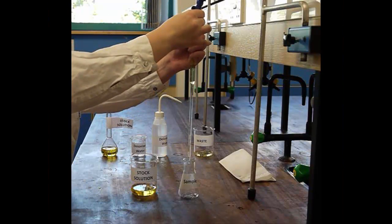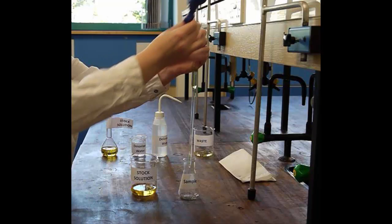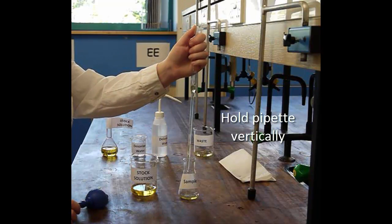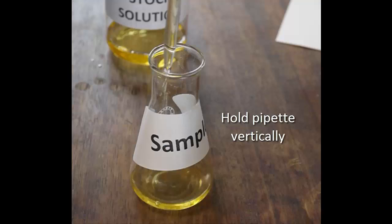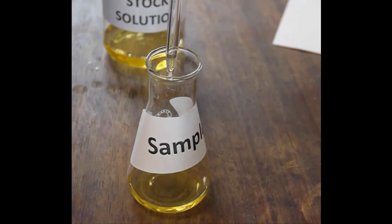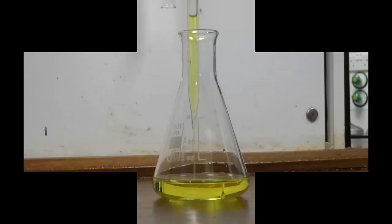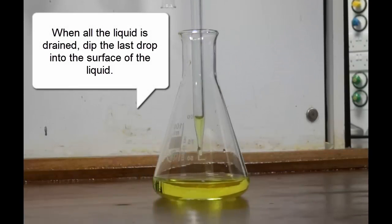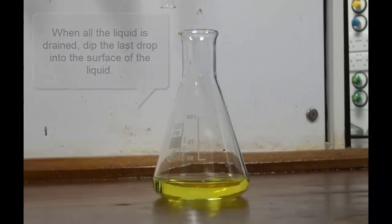Empty the pipette into the sample container. Make sure that the tip of the pipette is below the neck of the container and the solution does not run down the sides of the flask. Do not try to force out any remaining liquid as the pipette is calibrated to account for this.